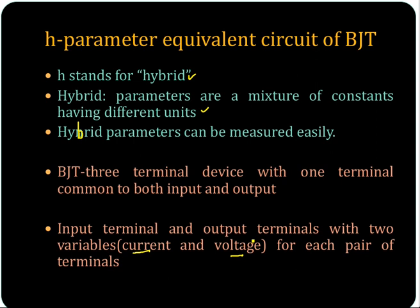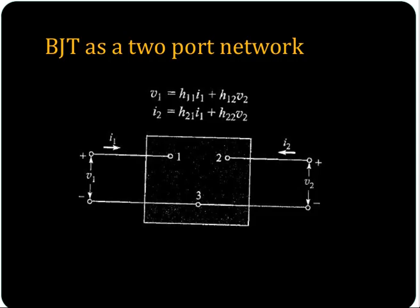So for each pair of terminals there are two variables. With that we are going to represent the hybrid equivalent circuit, considering this BJT as a two port network. Inside this you have the BJT with terminals taken outside. This is the common terminal.